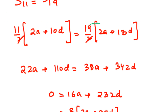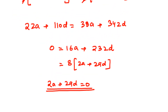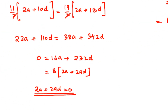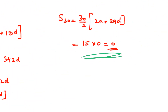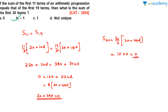Simplifying: 38a - 22a = 16a and 342d - 110d = 232d, giving 16a + 232d = 0. Dividing by 8: 2a + 29d = 0. Now the sum of 30 terms = (30/2)(2a + 29d) = 15 × 0 = 0. So the answer is option A: 0. This is an easy question once you remember the sum of n terms formula for an AP.